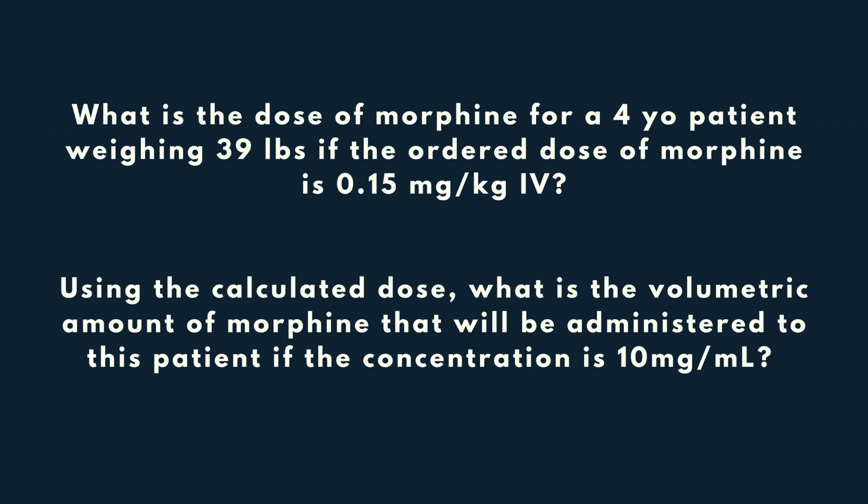For our example in this video, we are going to be using IV morphine and a dose that's been ordered for a particular patient. From this information, we are going to work several different types of questions so that you get a lot of exposure to different types of calculation problems. We are going to be giving a four-year-old patient weighing 39 pounds a dose of IV morphine.